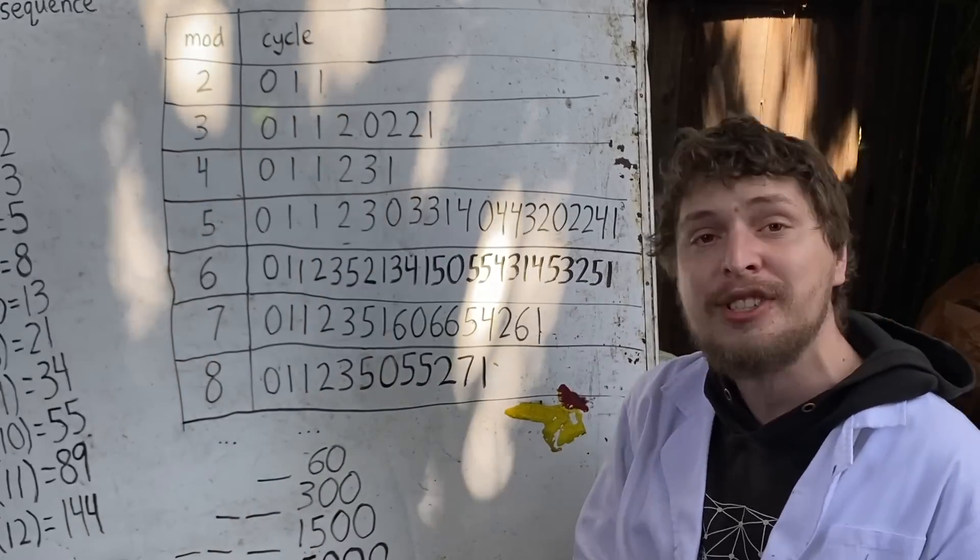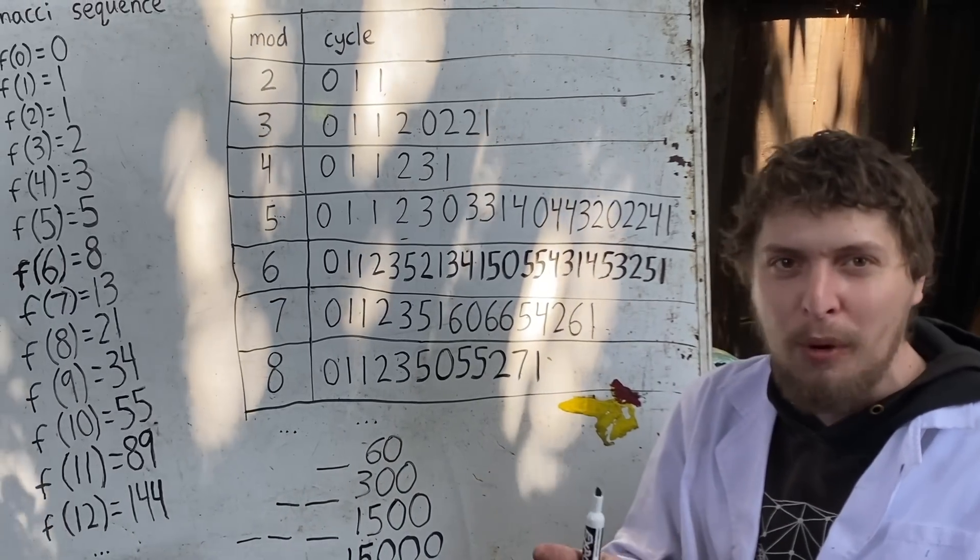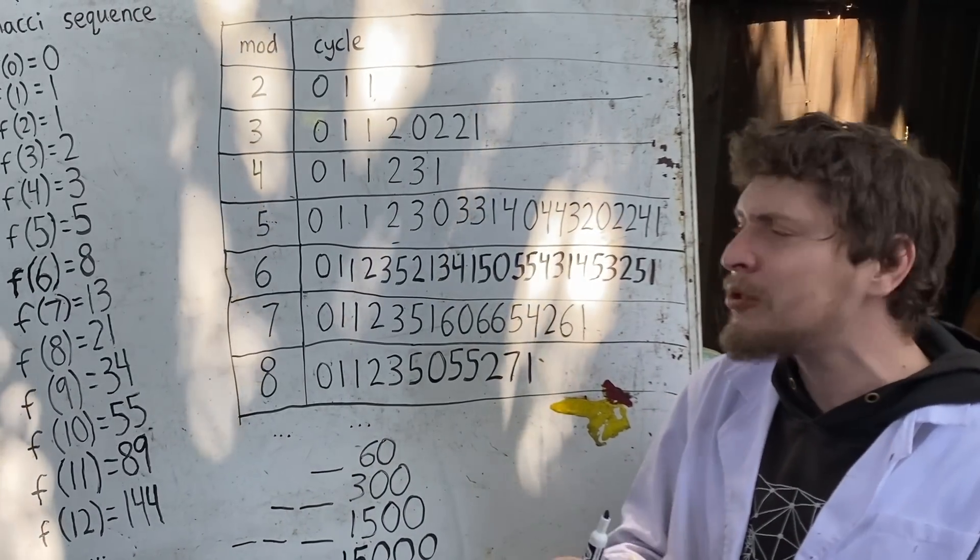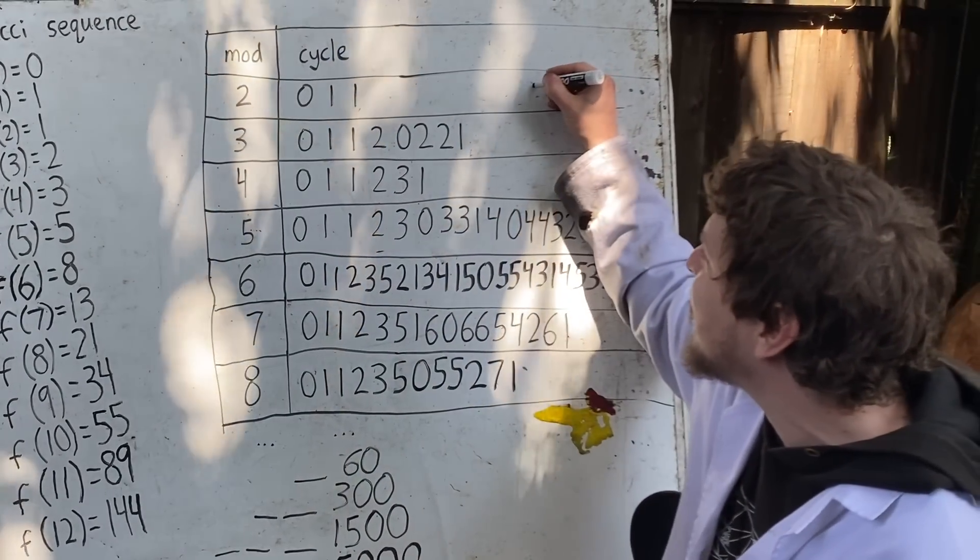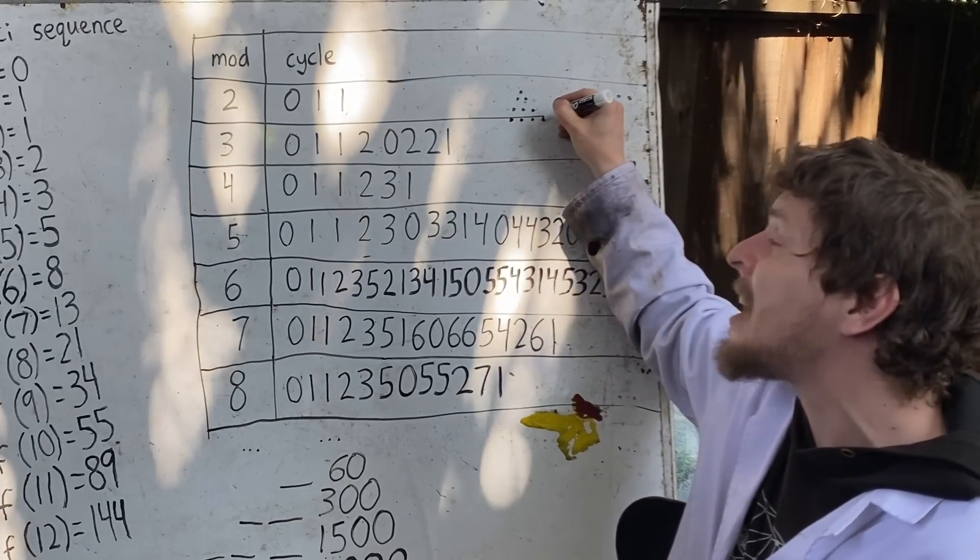And the Fibonacci sequence isn't the only type of numbers we could play these games with. In another episode before long, we'll look at what happens when we take triangular numbers and interpret those in different mods. Like, do those have cycles of their own? All right, folks, thanks for joining me today to learn about some clock-like patterns.